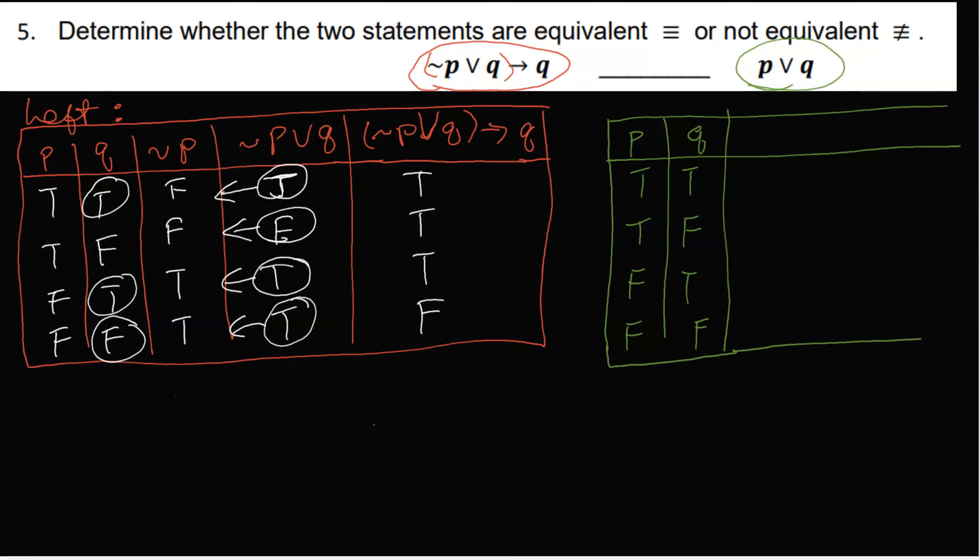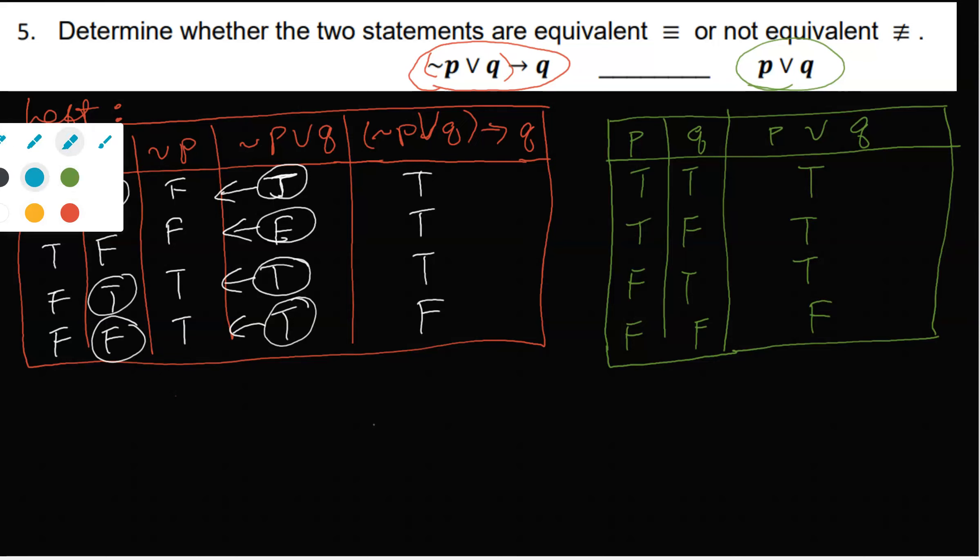In the end, if the values are the same then we would say they are equivalent. P or Q means this, that, or both. So this is true, true, true, false. And so we notice that the values here and the values here are the same.